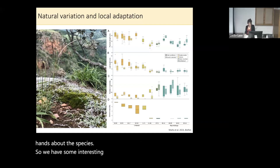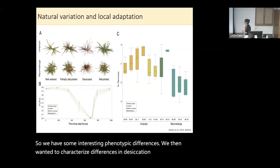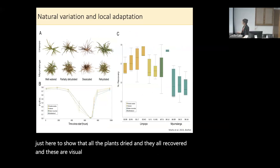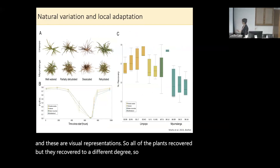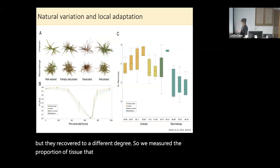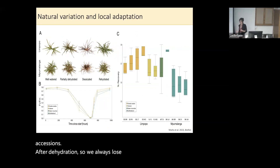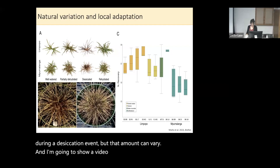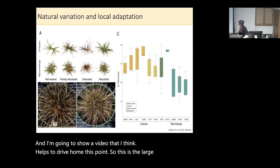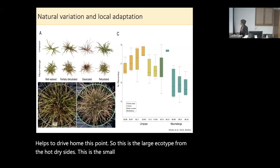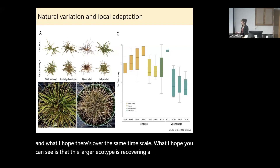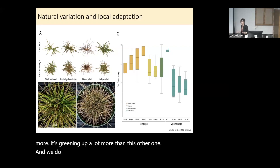We have some interesting phenotypic differences, so we then wanted to characterize differences in desiccation tolerance. We dried down all the plants and measured their recovery — all the plants dried and they all recovered, but they recovered to a different degree. We measured the proportion of tissue that recovered after dehydration. We always lose some tissue to senescence during a desiccation event, but that amount can vary. I'm going to show a video — the large ecotype from the hot-dry sites versus the small ecotype from the wet, cool sites. Over the same time scale, the larger ecotype is recovering and greening up a lot more than the other one, and we do find significant differences in the proportion of tissue that recovers.